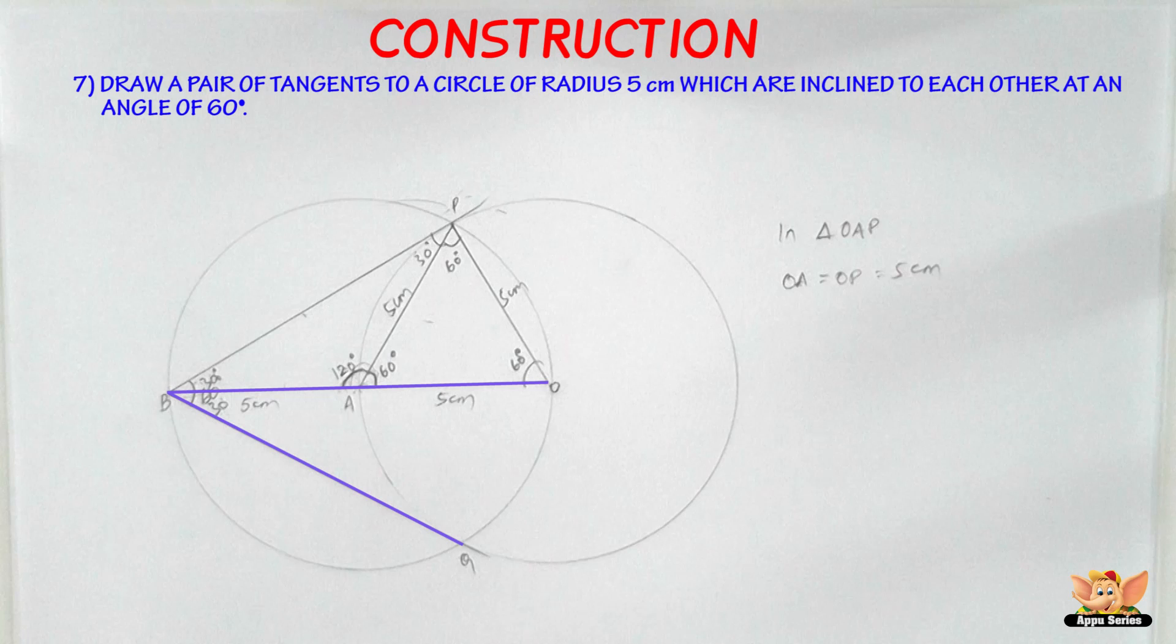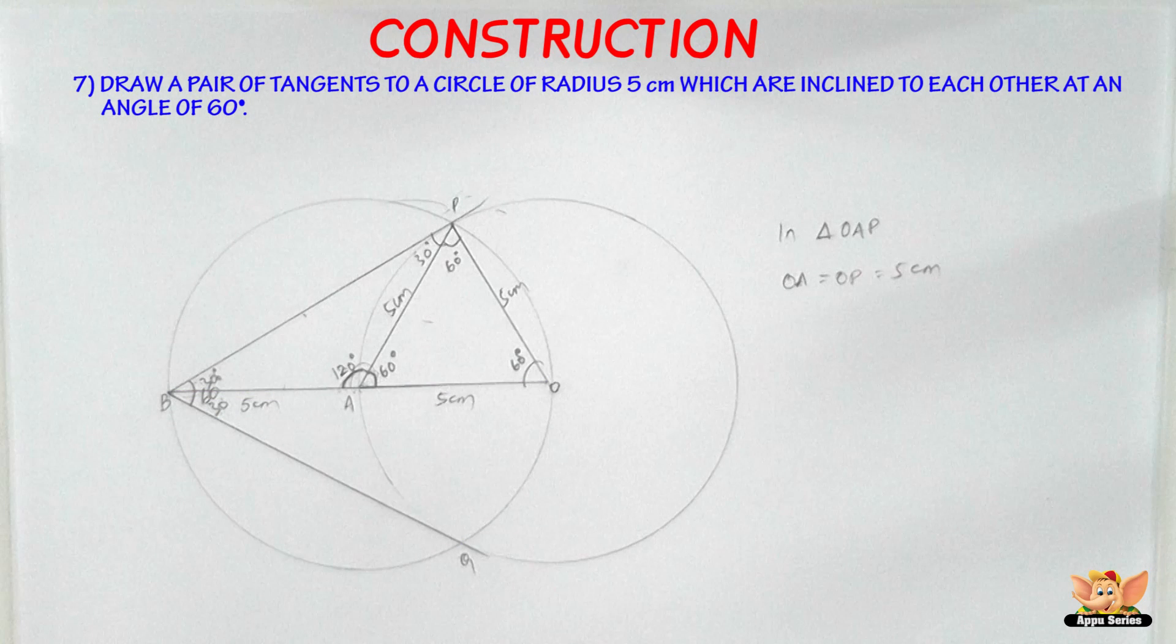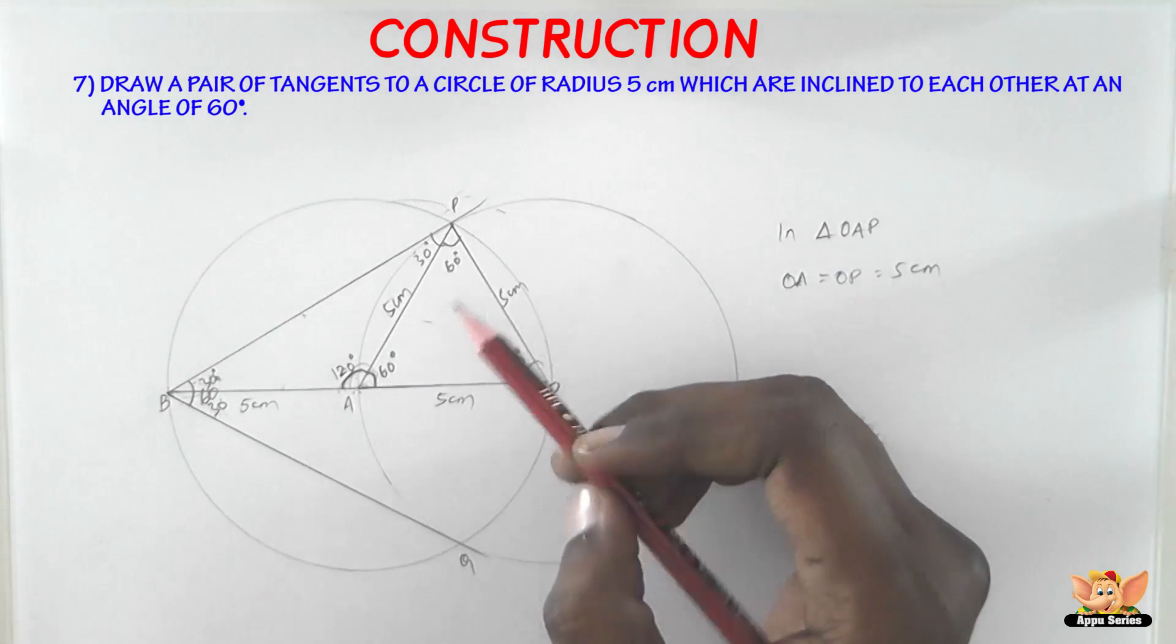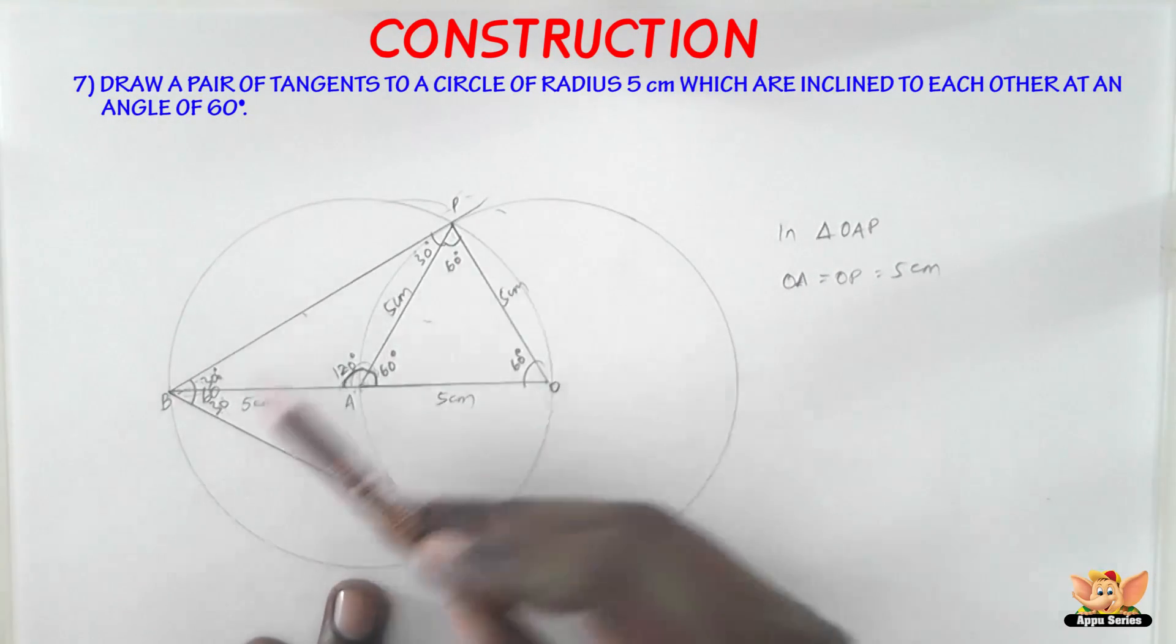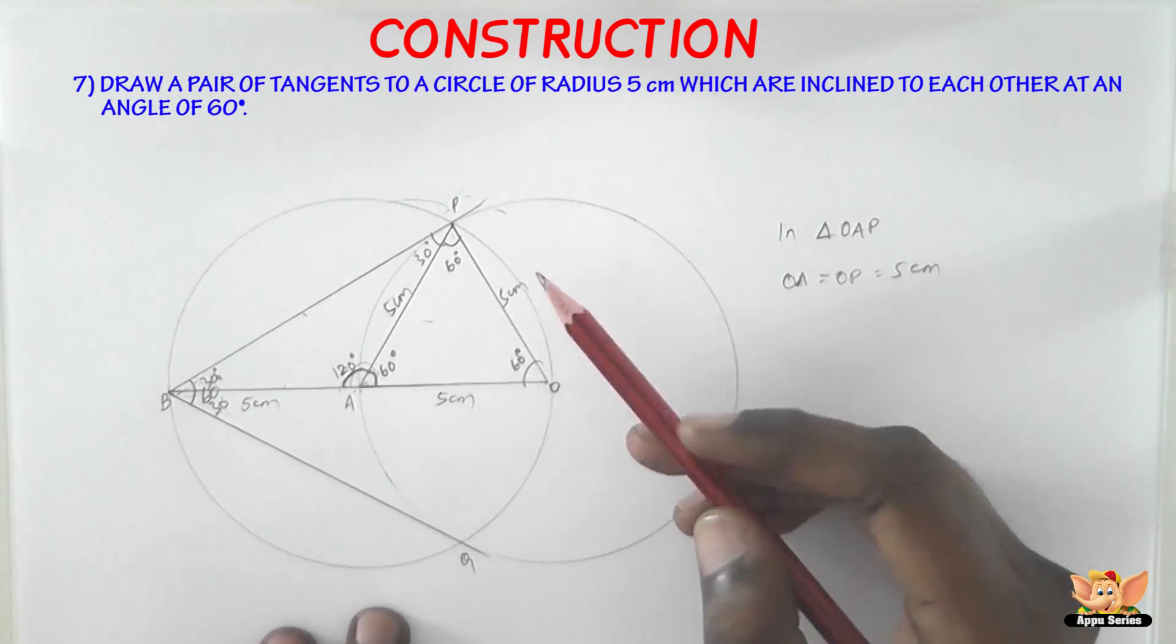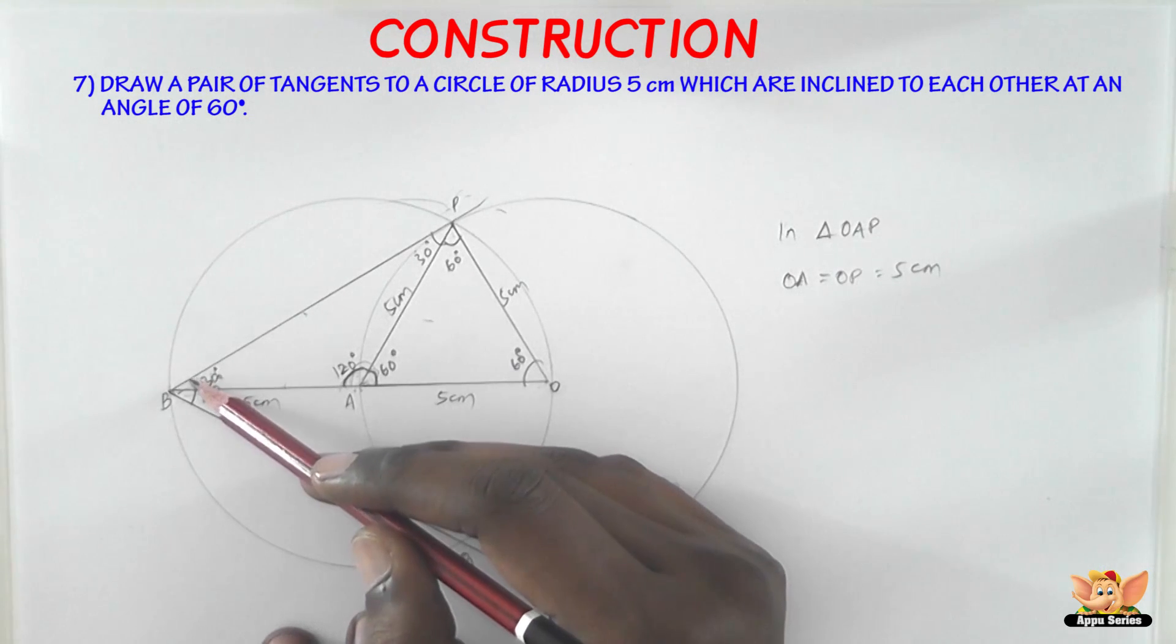And once you obtain the angle OBQ as 30 degrees, you add 30 and 30, which gives us 60 degrees. And that's how we measure 60 degrees between the two tangents that we've drawn. Now let's take triangle BAP. We have BA equals AP. So hence, we've got the tangents which measure 60 degrees between them.